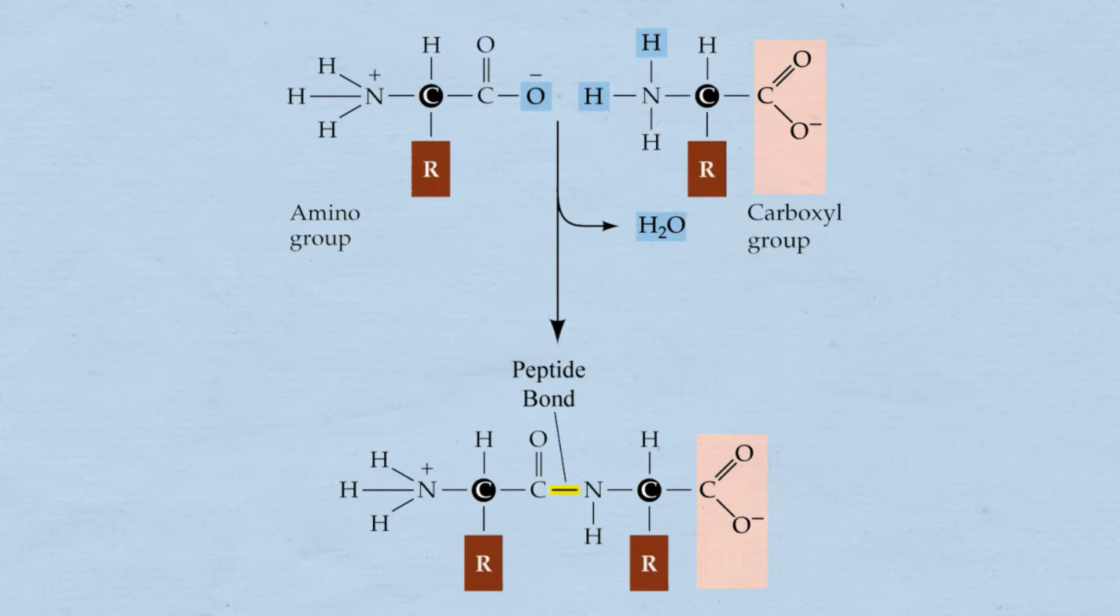Amino acids join together by forming peptide bonds. The OH from the carboxyl group and the hydrogen from the amino group are given off as water to produce a peptide bond.